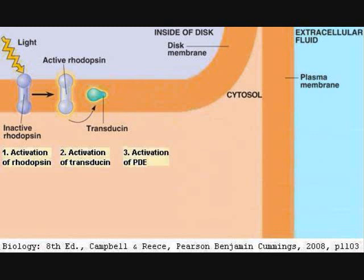The third step is activation of PDE. PDE stands for phosphodiesterase. It is an enzyme that cleaves certain phosphodiester bonds. The activated — that is, the GTP-bound — transducin binds with PDE. This binding activates PDE.